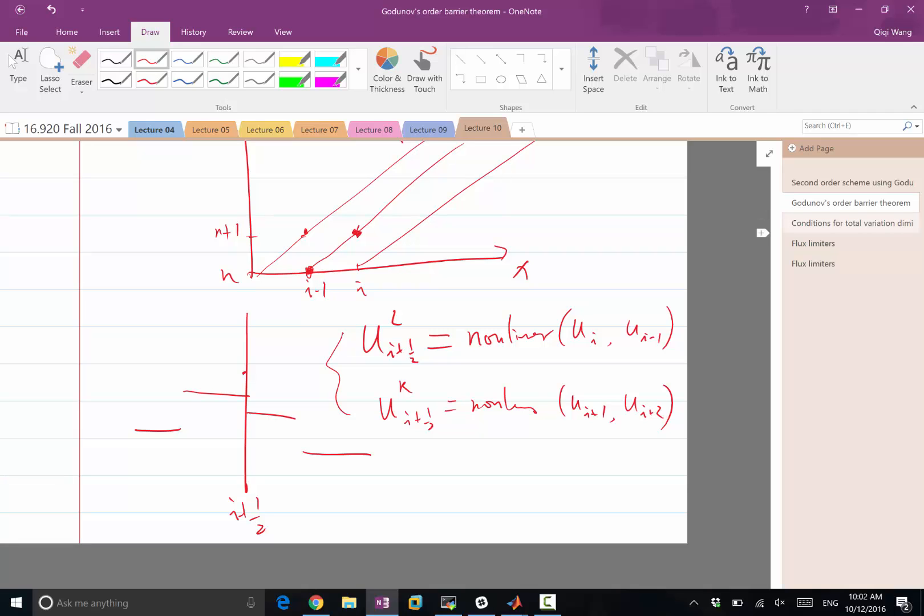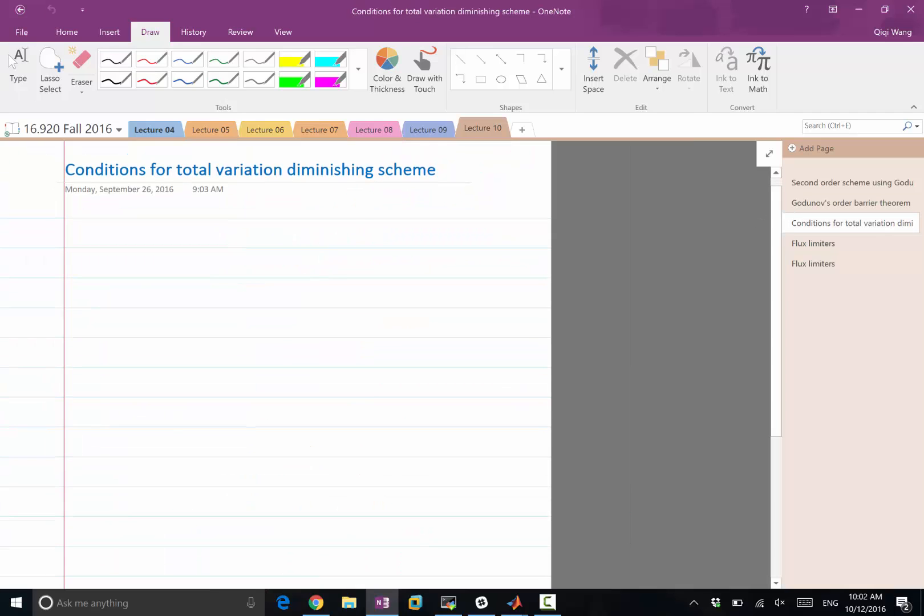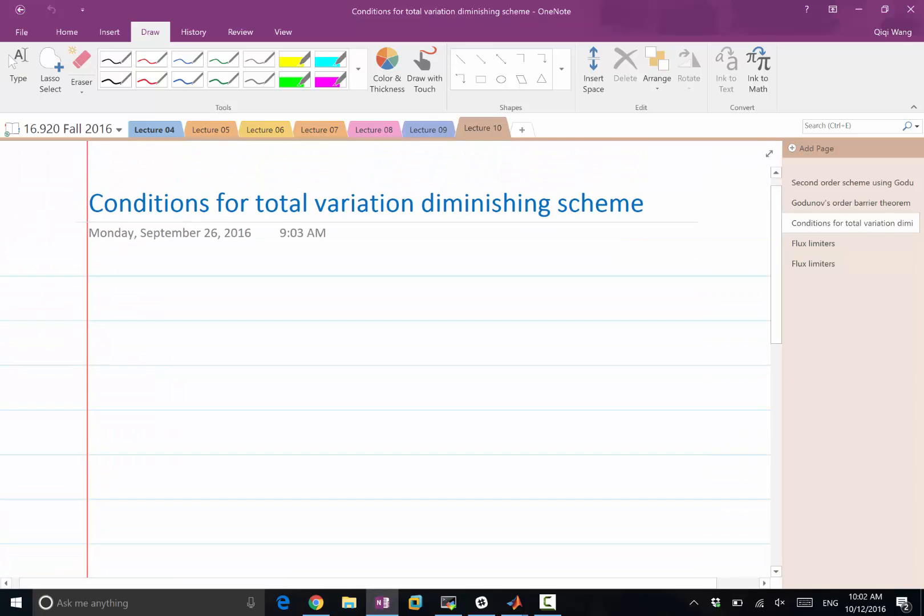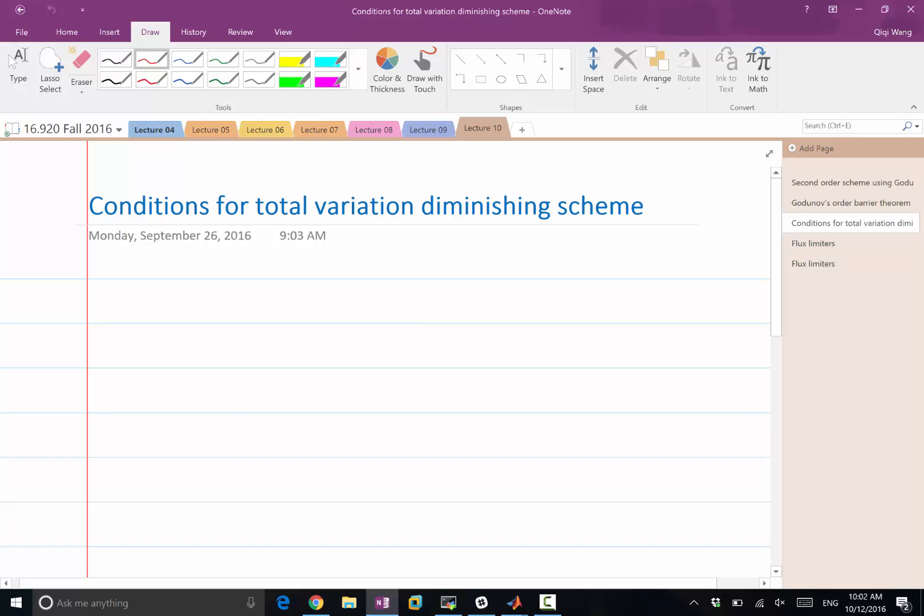So let's start to look at several cases, several very representative cases of how we want to reconstruct. So this is u, this is ui, this is ui plus 1, and this is ui plus 2, and this is a case where the solution is very smooth locally.